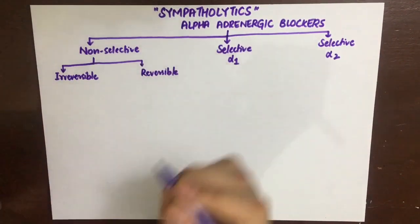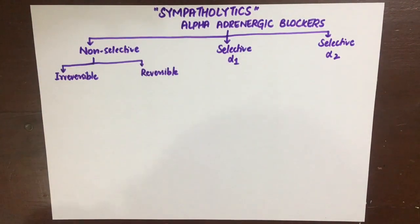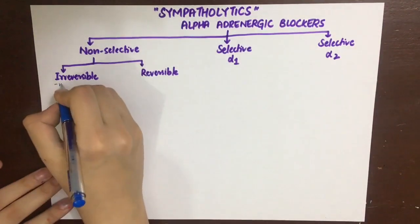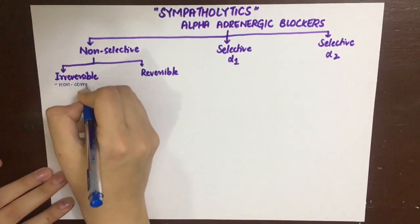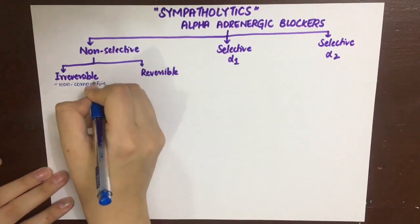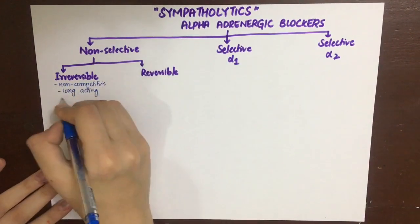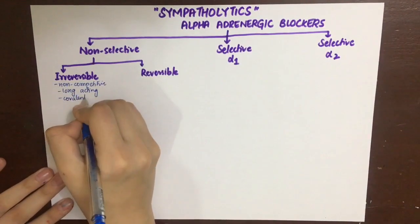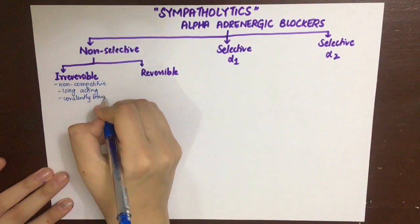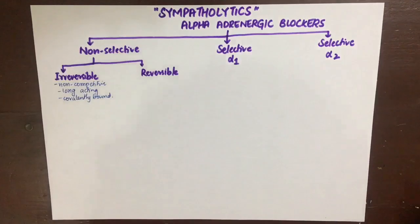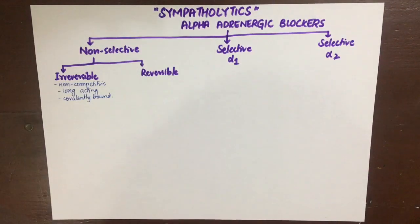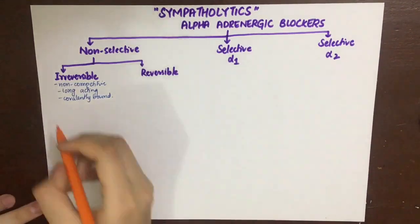The irreversible ones are irreversible because they are non-competitive antagonists that covalently bond to the receptor, so they are also long-acting and cannot be reversed. The chief drug in this class is phenoxybenzamine.